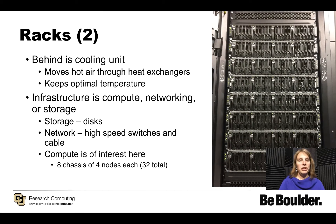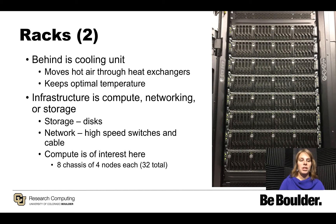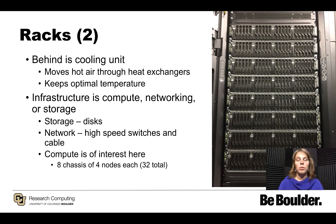Behind each of the racks is a cooling unit. The purpose of the cooling unit is to move hot air through heat exchangers, which allows the system to keep an optimal temperature. Infrastructure is made up of compute, networking, or storage. Storage is made up of disks. Network is made up of high speed switches and cable. Compute, which is of most interest here, is made up primarily of compute nodes, cores, and memory.